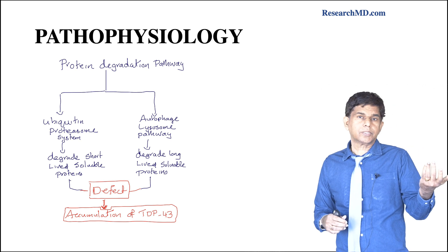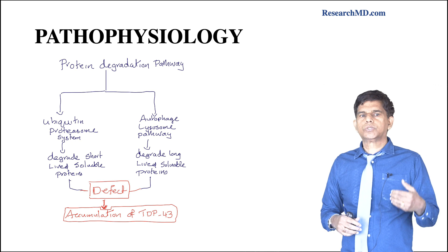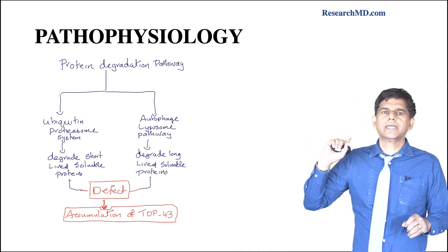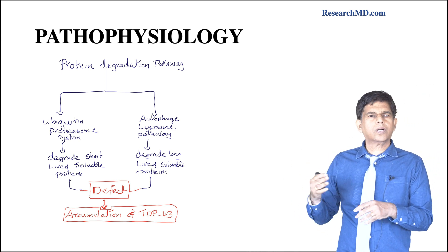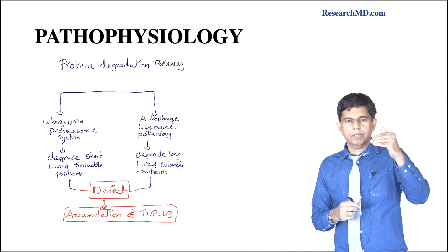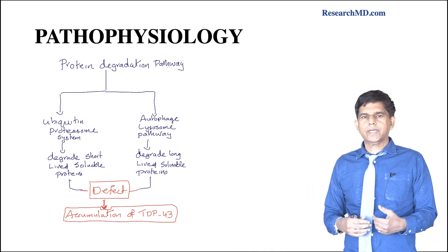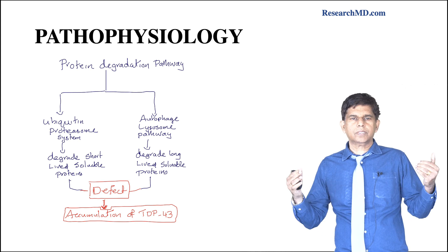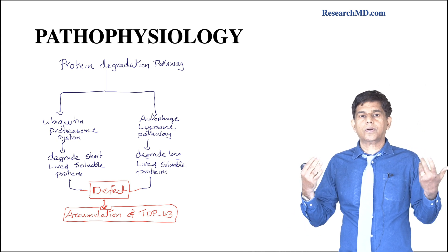There are two protein degradation pathways in our system. The first is the ubiquitin-proteasome system, which degrades short-lived soluble proteins. The second is the autophagy-lysosomal pathway, which degrades long-lived soluble proteins. Defects in either of these pathways result in accumulation of TDP-43, leading to neuronal degeneration and disrupted homeostasis.